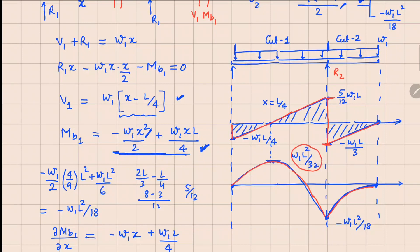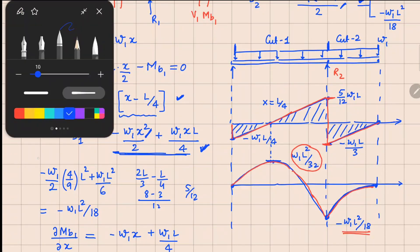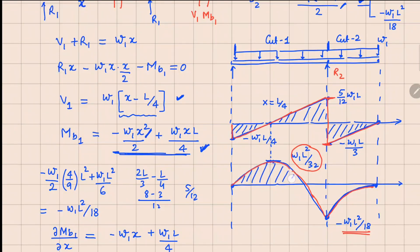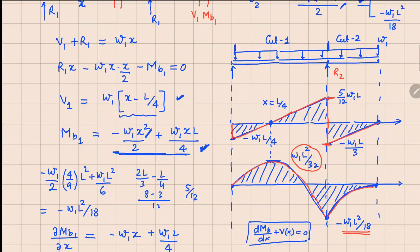The highest positive bending moment is W₁L²/32 and the most negative is −W₁L²/18. Notably, the peak of the bending moment parabola always occurs where the shear force is zero — this follows from the differential relationship dM/dx = V. Since W₁ = W₀ cos 30 = W₀√3/2, we substitute this back to express all values in terms of W₀. That completes the shear force and bending moment diagram for this problem.